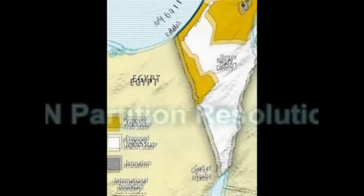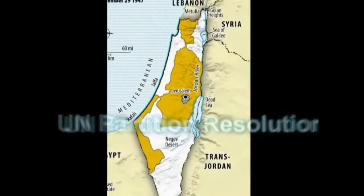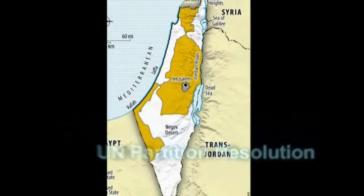The Arab-Israeli War was divided into three phases. The first phase started on November 29, 1947, after the UN Partition Resolution stated that Palestine was to be divided into a Jewish State and an Arab State. This is one of the main reasons why the Arab-Israeli War of 1948 flourished.